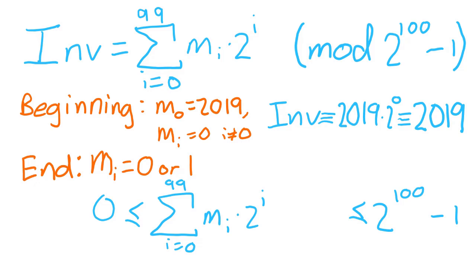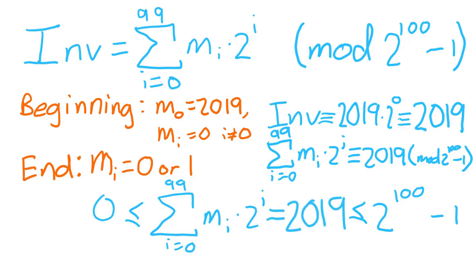Since the invariant at the start was 2019, at the end it's 2019 as well. Thus, the remainder of the sum mod 2^100 - 1 must be exactly 2019. Then by the size bounds I just mentioned, we get that the sum is exactly 2019.